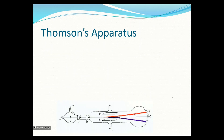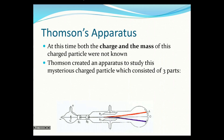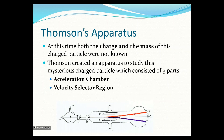Okay, so Thompson's apparatus. We're sort of going back in time here, because we know about the charge of the electron and Robert Milliken found the charge of the electron — but we're going back to before that was known. At this time both the charge and the mass of this charged particle were not known. Thompson created an apparatus to study this mysterious charged particle, which consisted of three parts: an acceleration chamber, a velocity selector region, and an ion selector region.